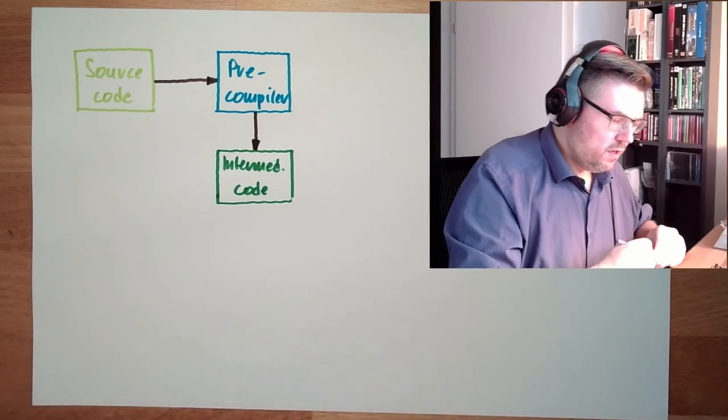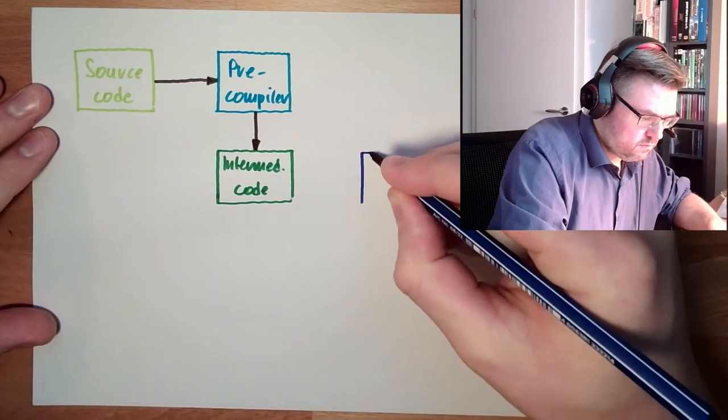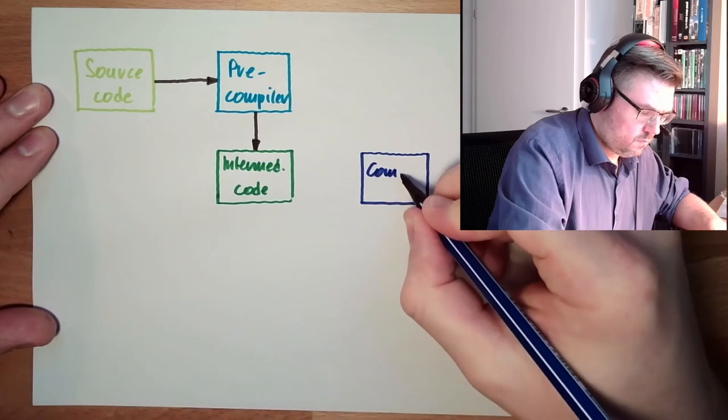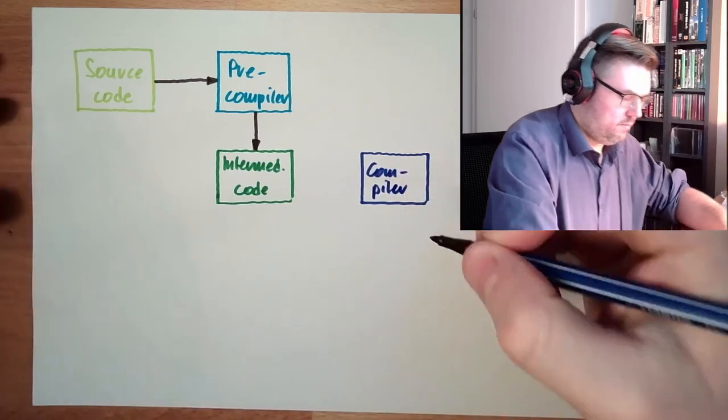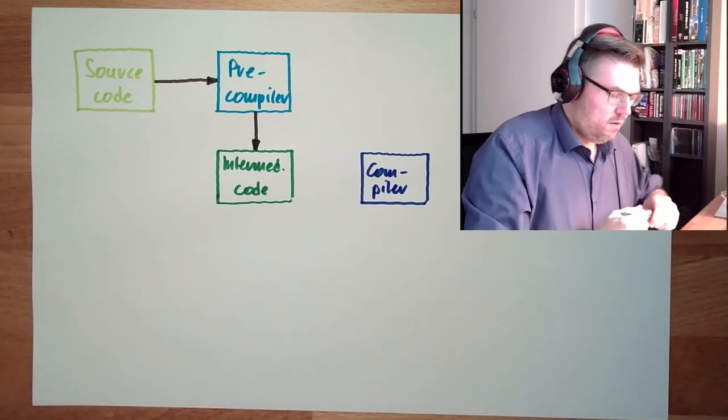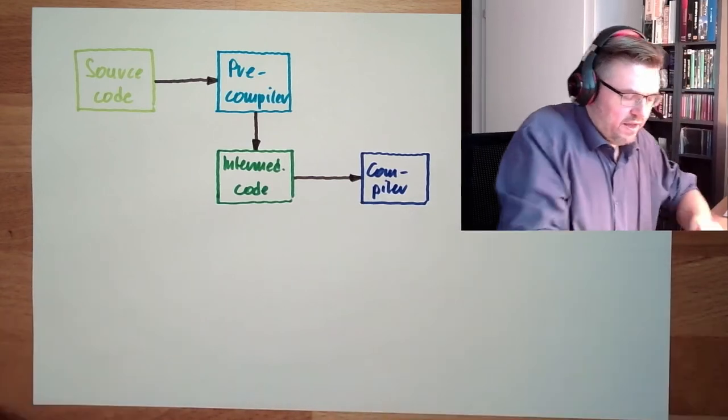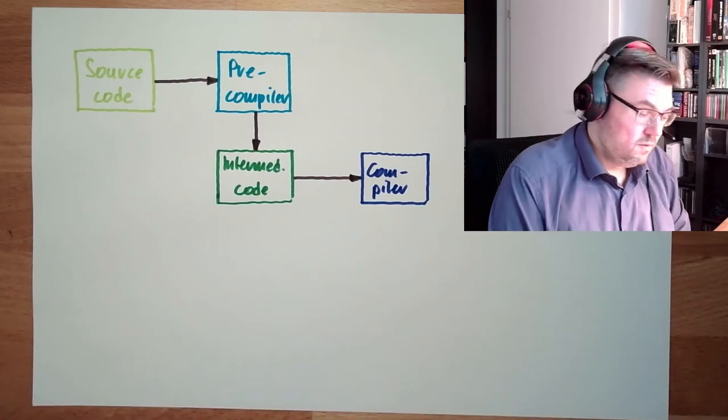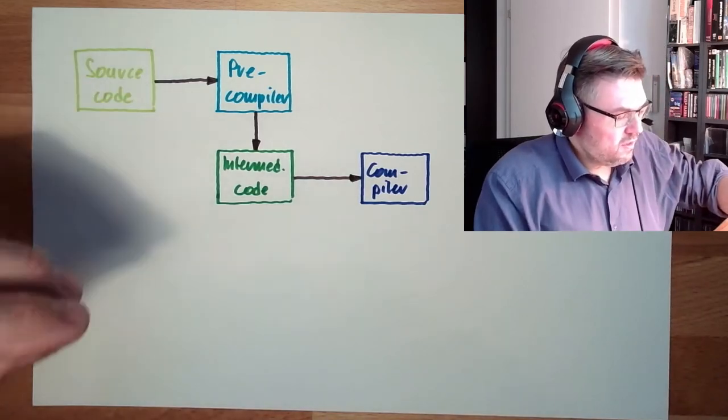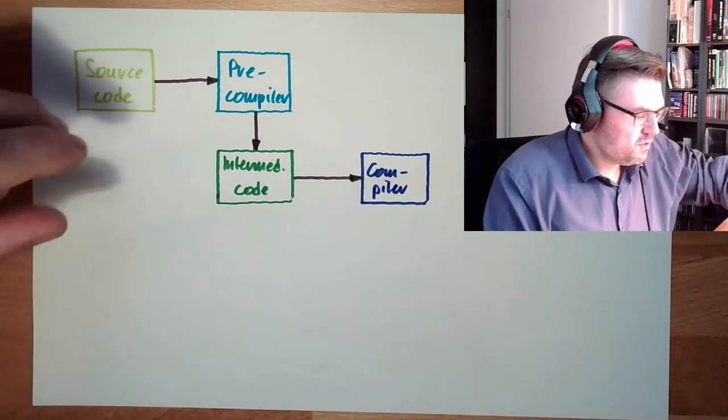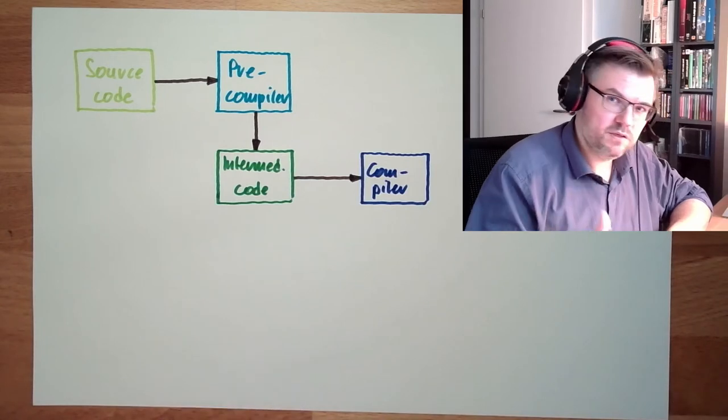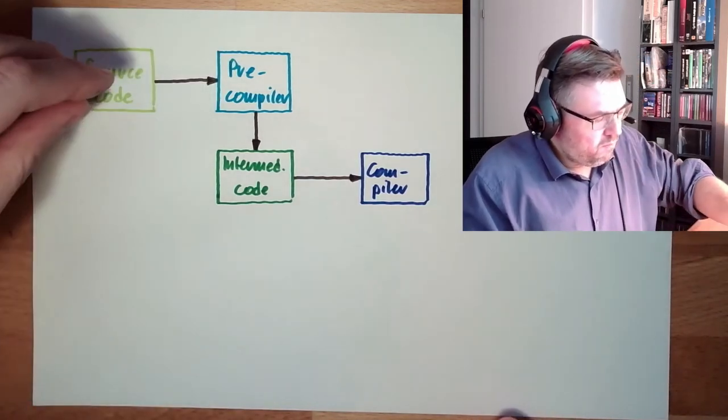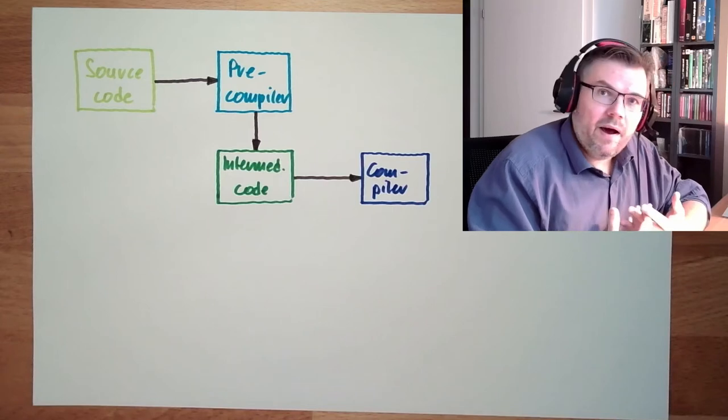Then this intermediate code is usually fed into a compiler. Compiler. This compiler now translates this intermediate code. Maybe directly into machine code. Or if the source code, depending a little bit on the program language, but if the source code consists of several parts, if there are libraries used for instance, or different source files, not only one, then there might be, might all the source files be translated, compiled individually.